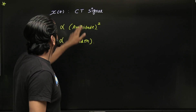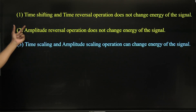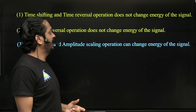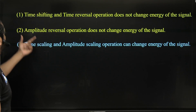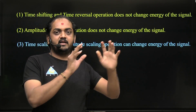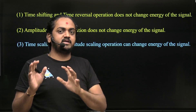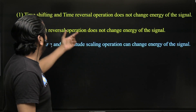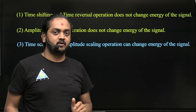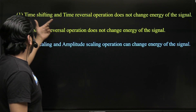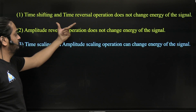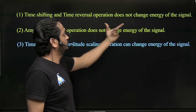So what we can conclude: time shifting and time reversal operations do not change the energy of the signal. In time shifting, the signal will shift either right side or left side by a certain amount of time, and in time reversal it is just folding with respect to the y-axis. So in these two operations there is no change in width and no change in amplitude, that's why there is no change in energy of the signal.